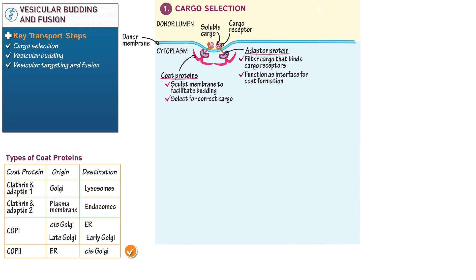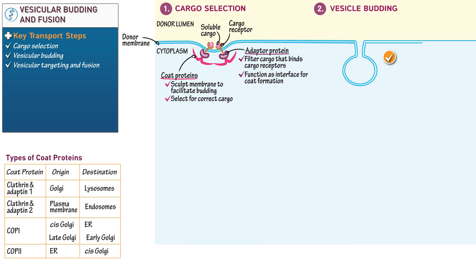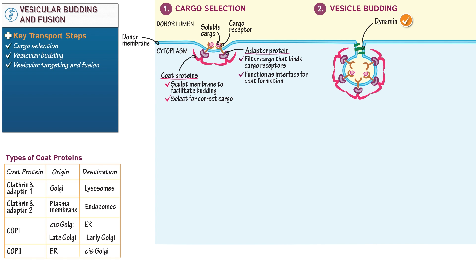Now that we've introduced the diversity of coat proteins within the cell, let's illustrate step 2 of vesicular formation, vesicular budding. Extend the donor membrane to illustrate this step, but this time with a more dramatic inward bulge. Again, draw cargo in the lumen and cargo receptors that bind a membrane scaffold on their cytoplasmic side. Now draw an additional protein that spirals around the neck of the budding vesicle and label it dynamin. Write that dynamin family proteins are GTPases, which hydrolyze GTP to GDP.